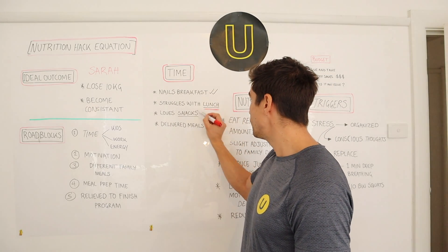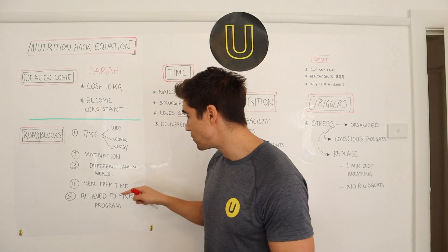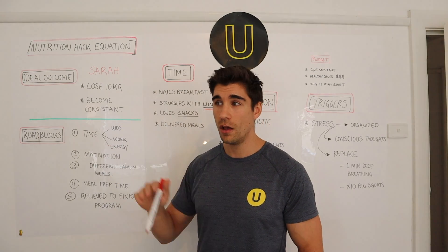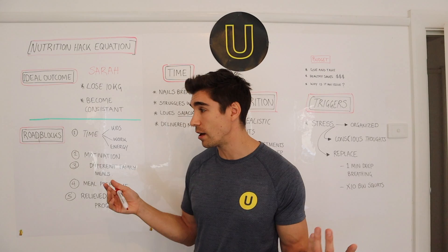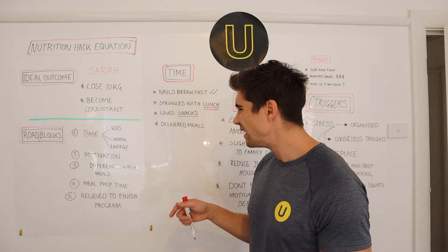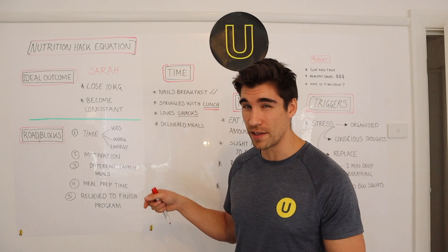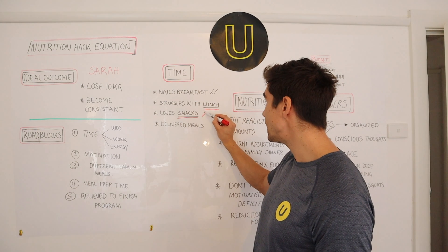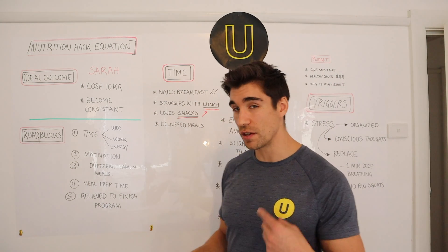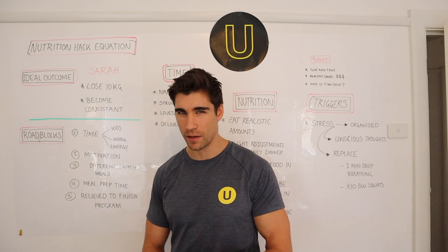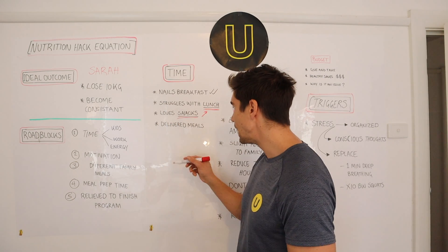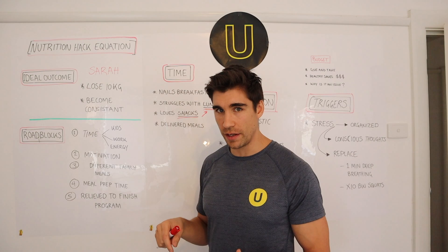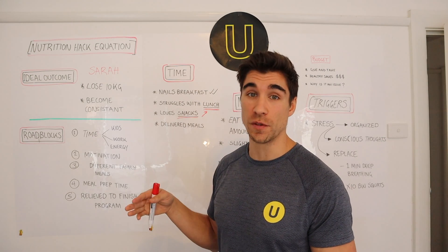She really struggles with lunch. She's working full time, and if she doesn't get time to do her meal prep on Sunday, she's got no lunches for the week. She finds herself either snacking through the day, missing lunch completely, or going down to the cafeteria and getting fatty foods that zap her energy in the afternoon. She loves snacks, and that probably has something to do with not getting a decent lunch and grazing on the wrong stuff — the coffee, cake, and biscuits from the lunchroom.